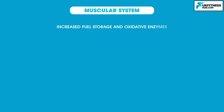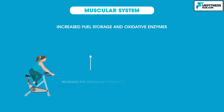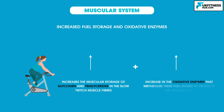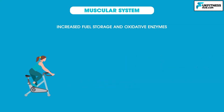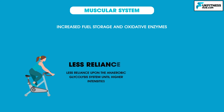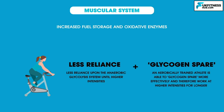There is also increased fuel storage and oxidative enzymes. Aerobic training increases the muscular storage of glycogen and triglycerides in the slow-twitch muscle fibers, and there is also an increase in the oxidative enzymes responsible for metabolizing these fuel stores to produce ATP aerobically. This means there is less reliance upon the anaerobic glycolysis system until higher intensities. Due to the increased levels of enzymes associated with fat metabolism, an aerobically trained athlete is able to glycogen spare more effectively and therefore work at higher intensities for longer.